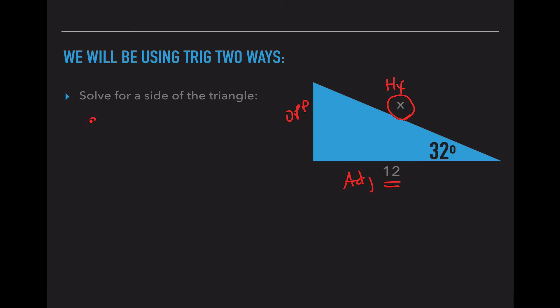So if I come over here and I write my SOHCAHTOA again, I want to use the one that has the adjacent and the hypotenuse. So over here I'm going to use cosine. So cosine theta is the adjacent leg over the hypotenuse leg. So cosine 32 equals 12 over hypotenuse.